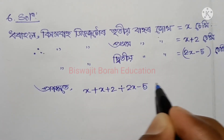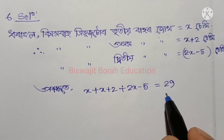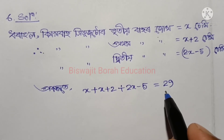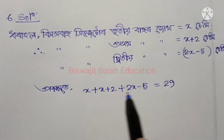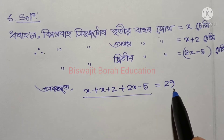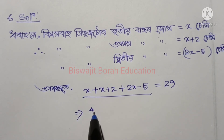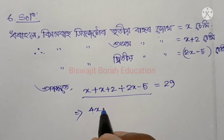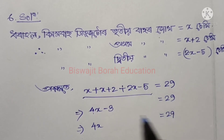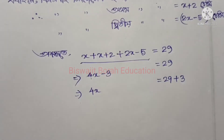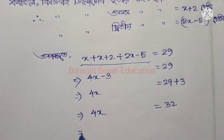Setting up the equation: plus 2 minus 3 equals 29. So 4x equals 29 plus 3, giving 4x equals 32. Therefore x equals 32 divided by 4.